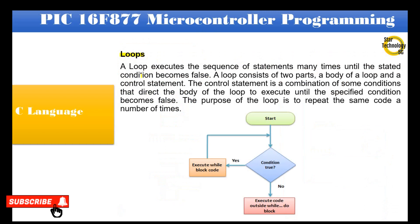A loop executes a sequence of statements many times until the stated condition becomes false. A loop consists of two parts: a body of the loop and a control statement. The control statement is a combination of conditions that directs the body of the loop to execute until the specified condition becomes false. As shown in the block diagram: start loop, if condition is true execute the block of code, if condition is false exit from the loop.